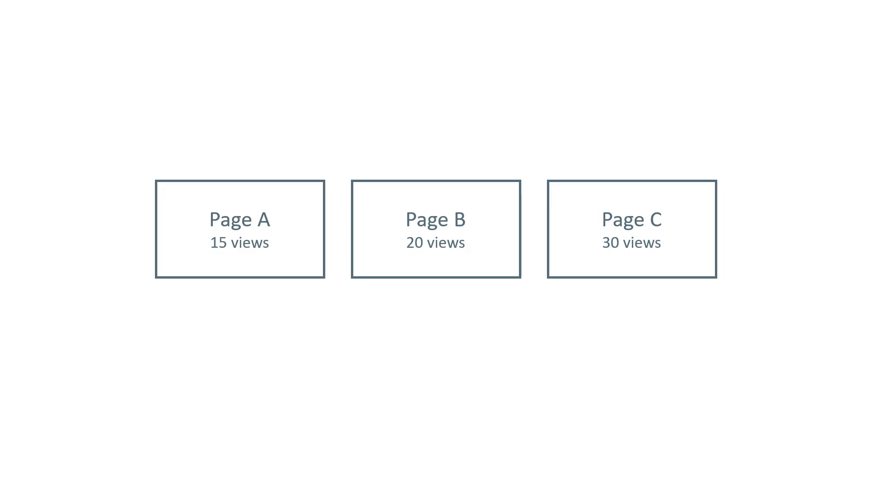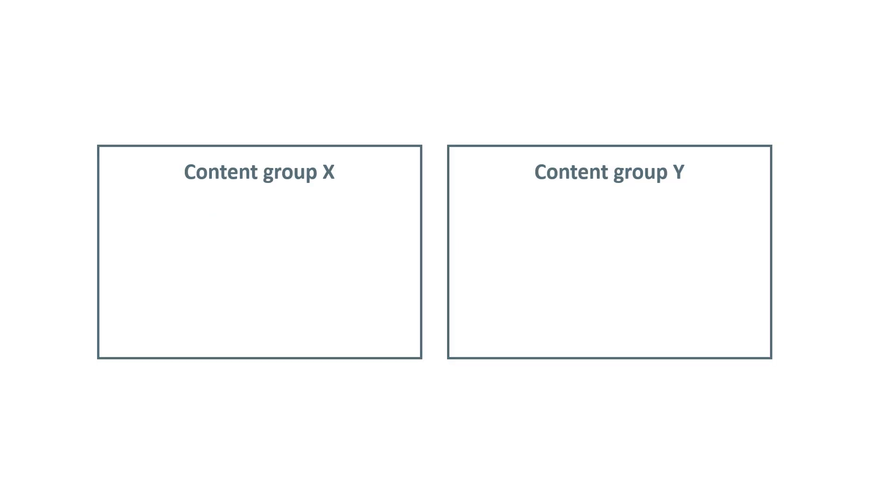Content groups in Google Analytics allow you to group content and then see more aggregated data — for example, based on page category or maybe type of content. Let's say that I have three pages on a website and I know how many views each page got. But with content groups, I could group some of these pages based on their topic, category, or something else and see a different report.